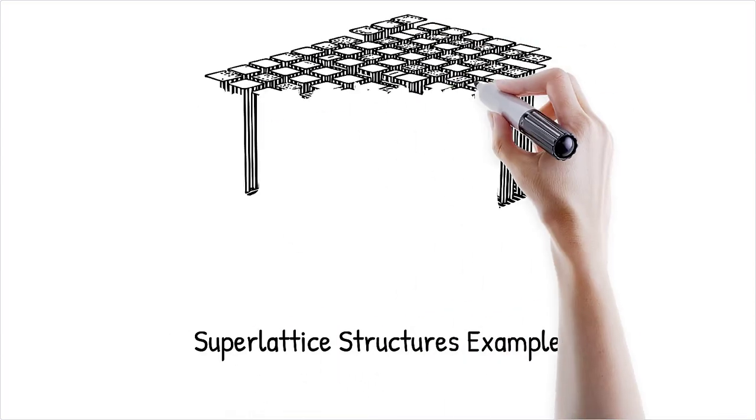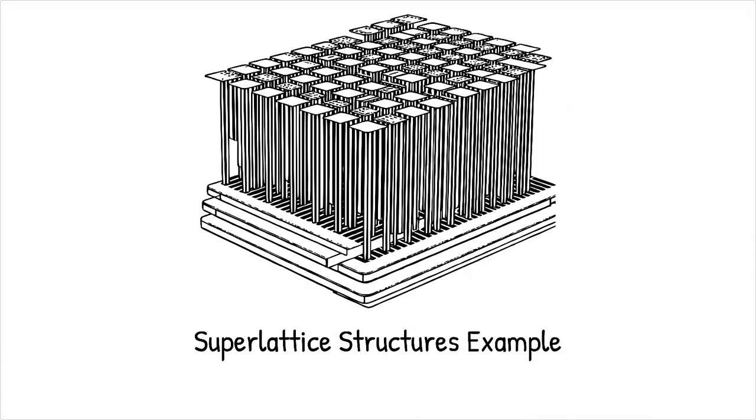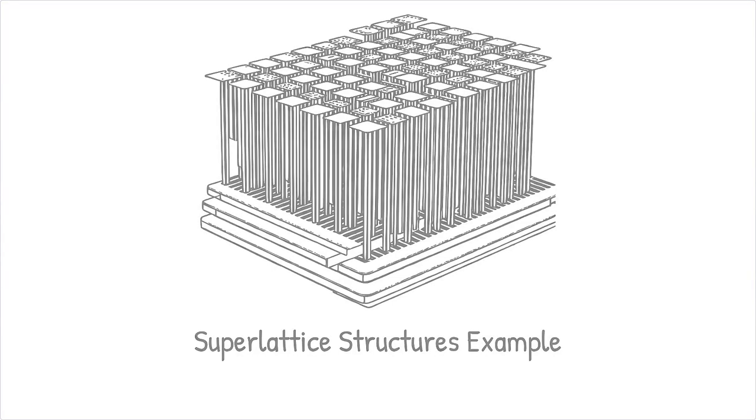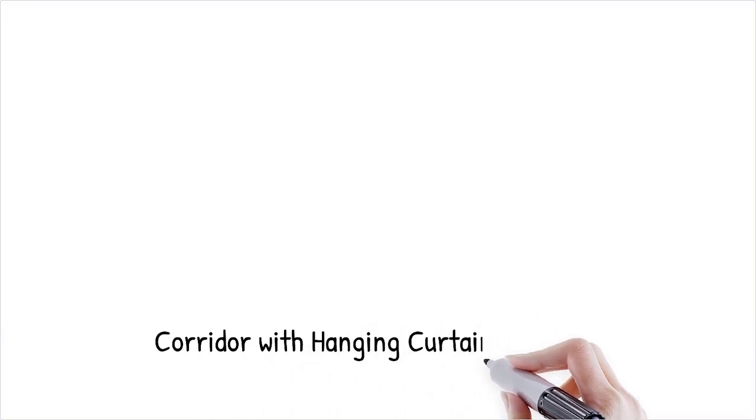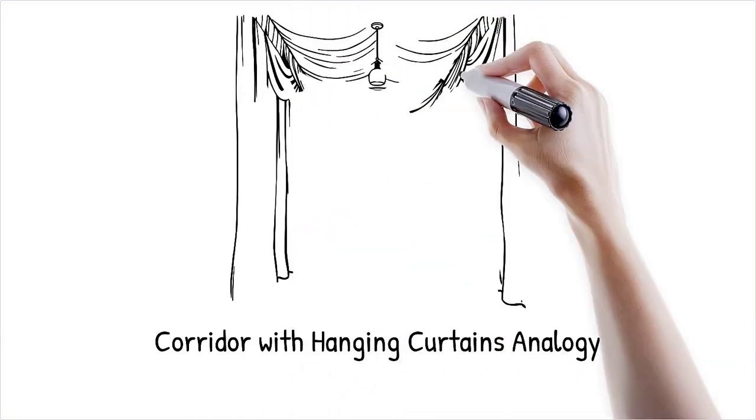In superlattice structures made from alternating thin layers of two different materials, e.g. Si/Ge, phonons are partially reflected at each interface, leading to reduced thermal conductivity due to interface resistance. It's like shouting through a corridor filled with hanging curtains.